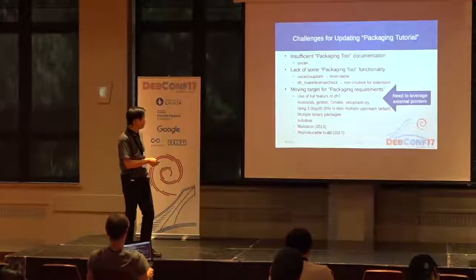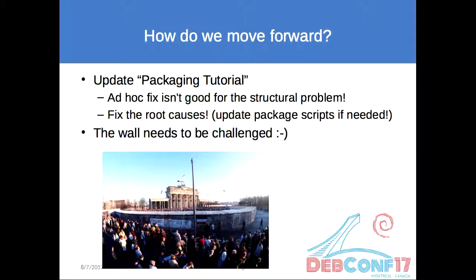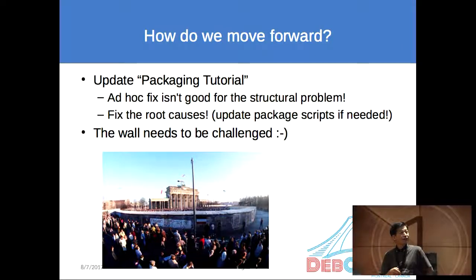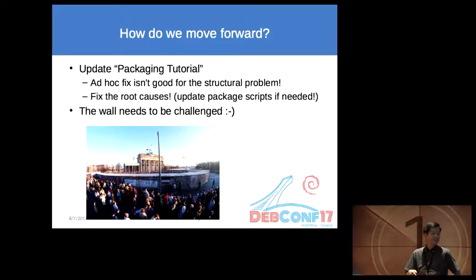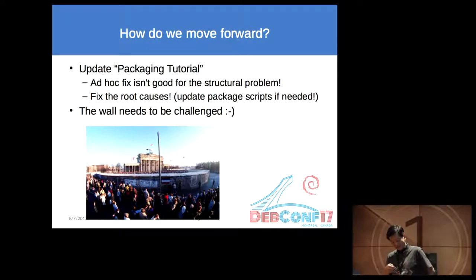Then there was substitute bar, multi-arch, reproducible build — all these new things came in. So how do we move forward? That's how I faced the problem. The packaging tutorial was doing all the ad hoc fixes, but that's not good enough, and we need a structural change. And also the root cause — the tools — need to be updated. So if there is a wall, we need to challenge it. This wall was challenged, and there are a couple of other walls which need to be challenged.